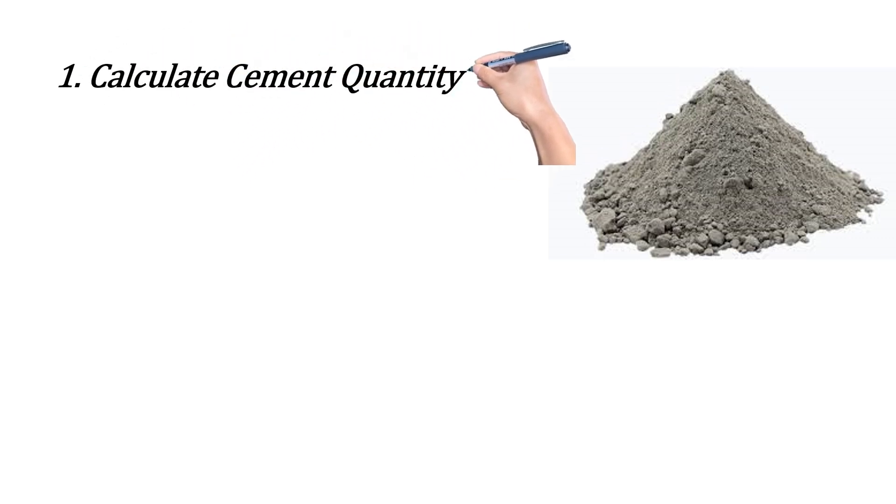Moving on to next, now we have to break down the quantities of material used in wall plastering. Let's calculate the cement quantity. Here we have given the cement and sand mix ratio is 1 into 4.